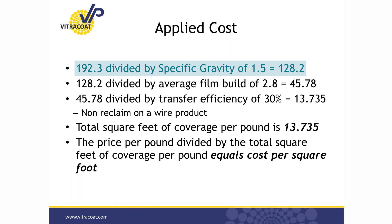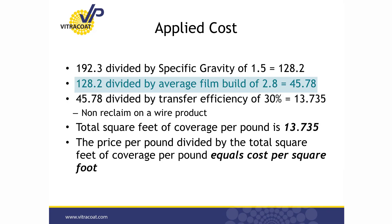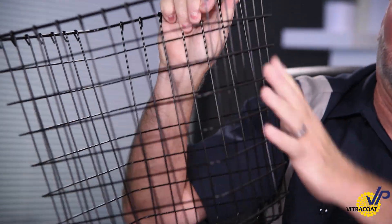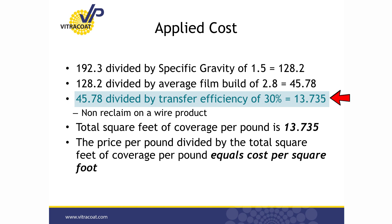Now I have to account for the film build, because I'm not putting it on at one mil — I'm putting it on at an average of 2.8 mils. So divide 128.2 by 2.8, and now I'm down to 45.78 square feet. But I'm not utilizing 100% of my coating either. If I was spraying a flat surface and reclaiming, I could be as high as 90 to 95%. But I'm in a non-reclaim application using this wire basket, so my transfer efficiency is going to be very low because of all the air I'm spraying through that part. Using 30%, I'm now down to 13.73 square feet.